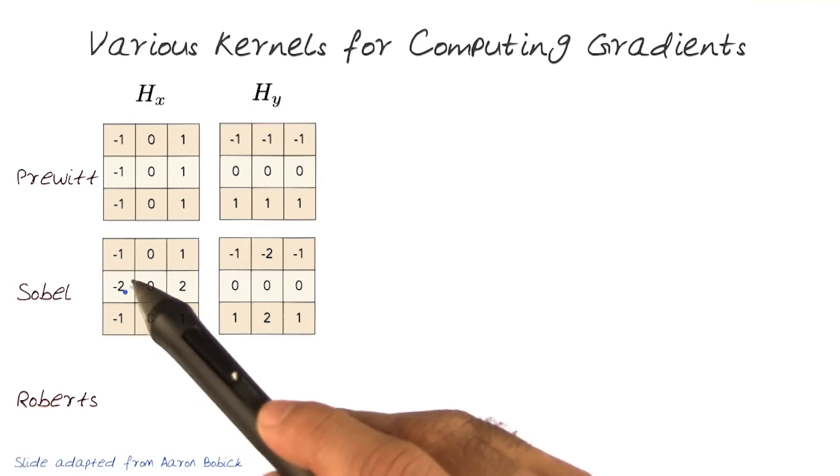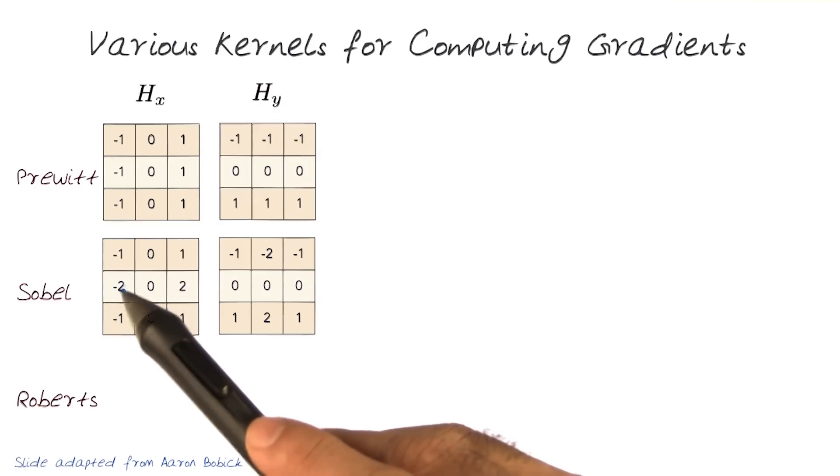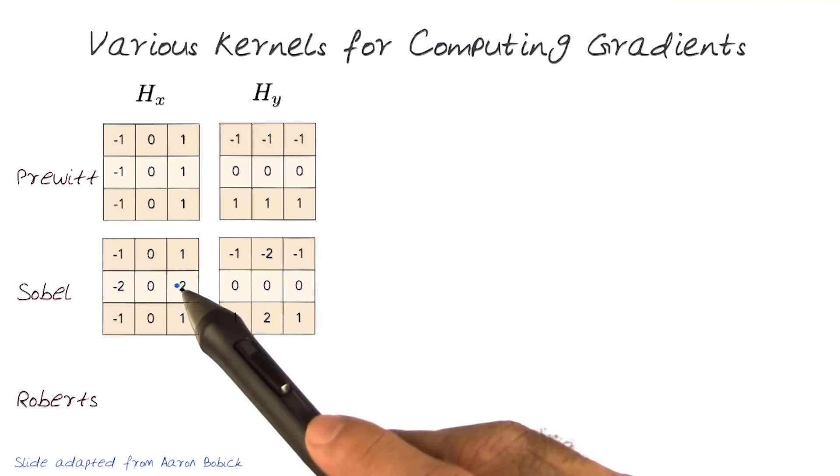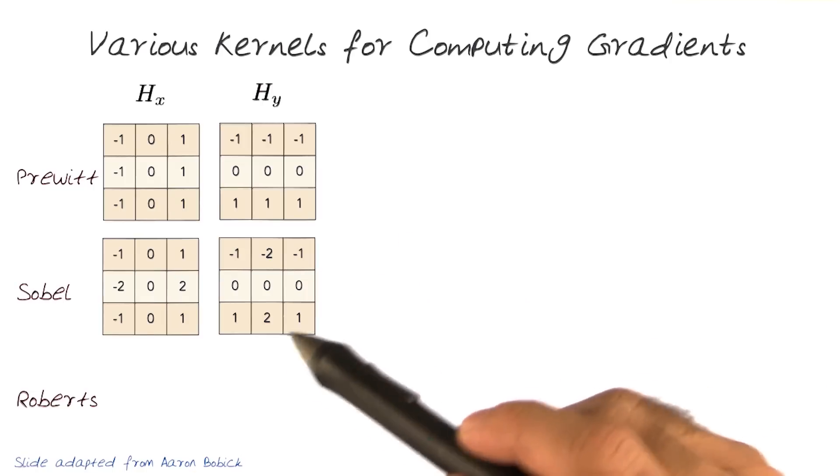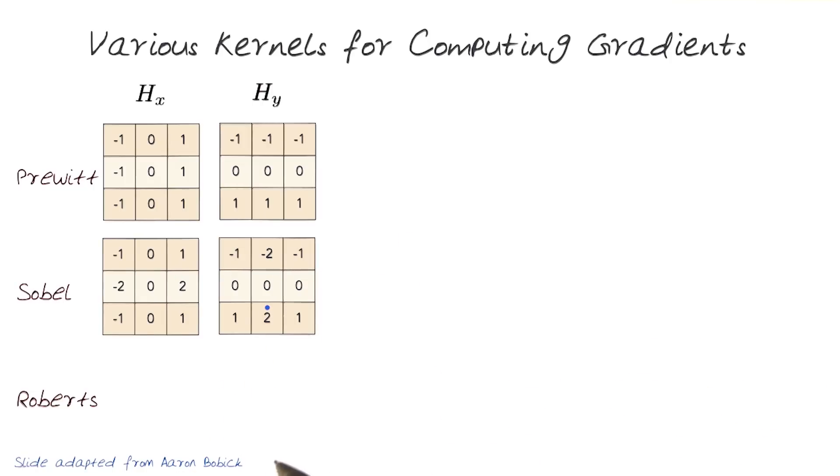The Sobel gives heavier weight to the middle kernel values. Remember we looked at how giving a ramp in the middle provides more information locally. The transpose is shown here.